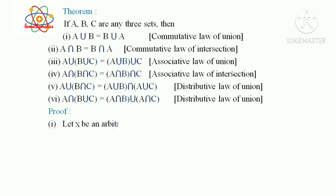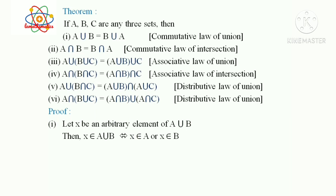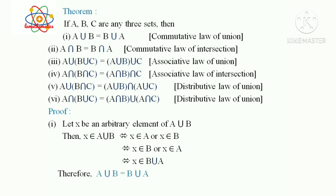Proof: Let x be an arbitrary element of A union B. Then x ∈ A union B implies and is implied by x ∈ A or x ∈ B, implies and is implied by x ∈ B or x ∈ A, implies and is implied by x ∈ B union A. Therefore A union B equals B union A.